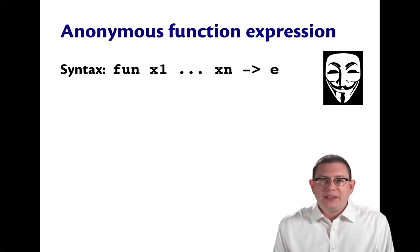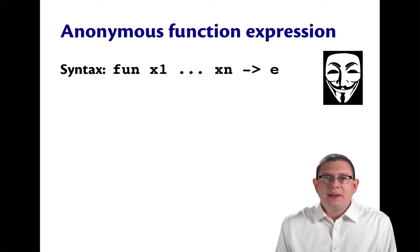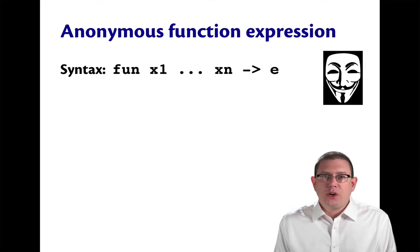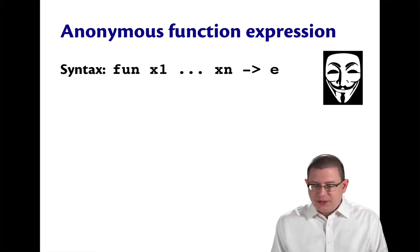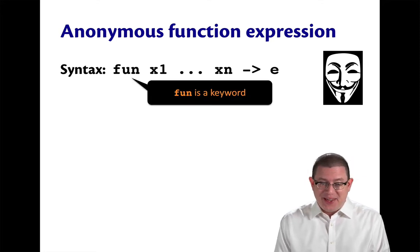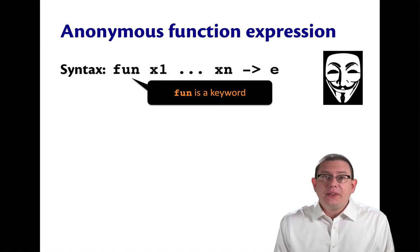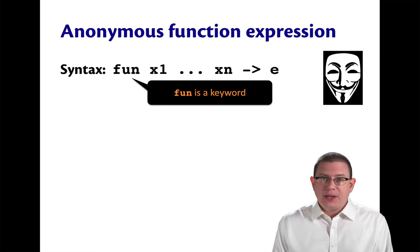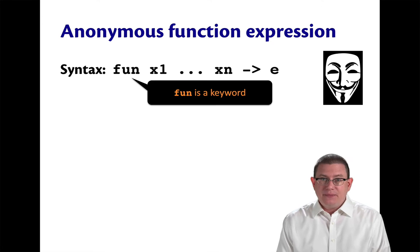Let's take a closer look at the syntax and semantics of anonymous functions and application. An anonymous function expression has a keyword fun at the beginning of it — fun is a keyword in OCaml. After that, there are some arguments to that function. These are the names of the parameters as they will be known in the body of the function, x1 through xn.